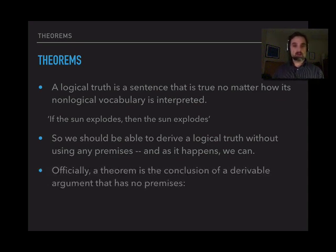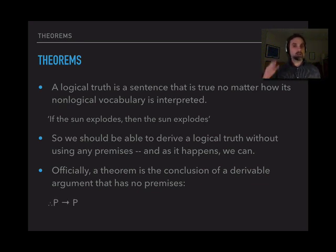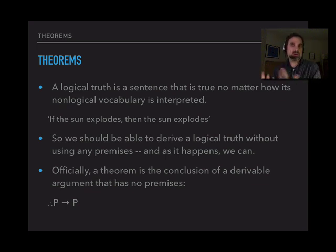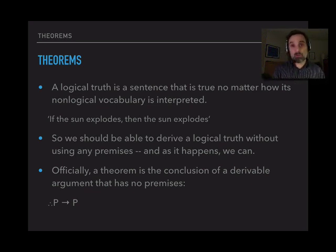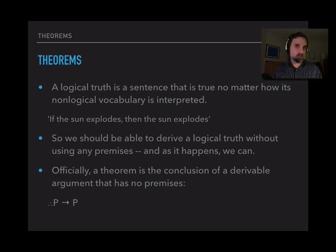So officially, a theorem is the conclusion of a derivable argument with no premises. A logical truth is true under any circumstances whatsoever — at least true no matter how we interpret the non-logical vocabulary. A theorem is derivable from no premises. And those two coincide: something is a theorem if and only if it's a logical truth. You're either both or neither.